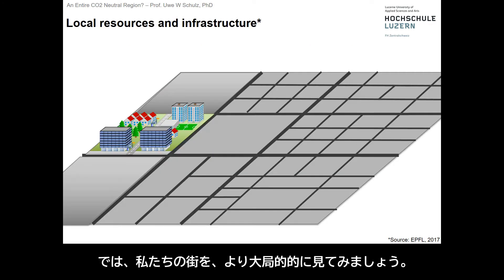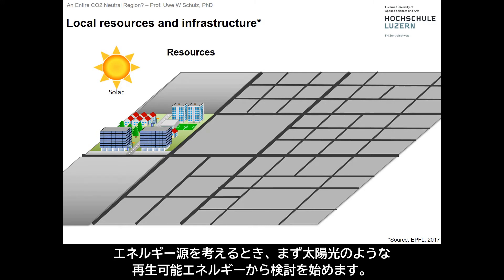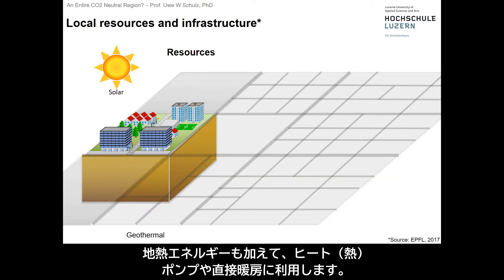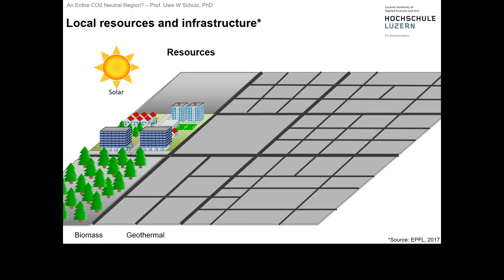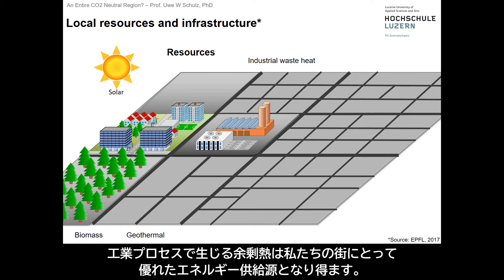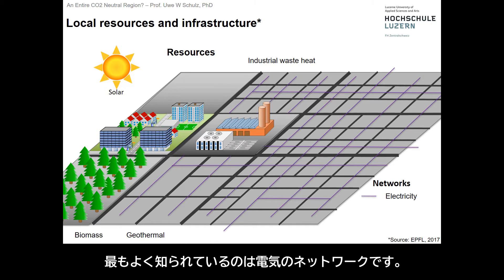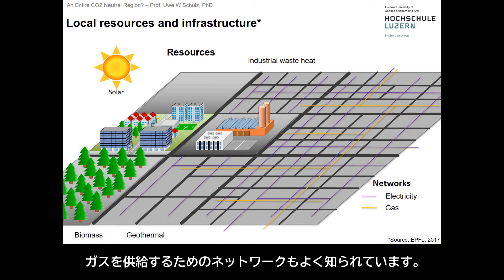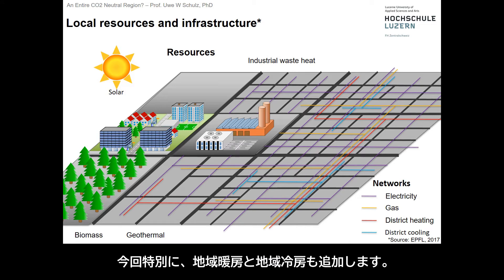Now we place our district into a bigger picture. When we look at energy resources, we start with renewable energies like solar. It also includes geothermal energy from the ground, either for the heat pump or for direct heating. Wood as biomass — biomass is an excellent resource if being reforested. Excess heat from industry processes could provide an excellent resource for energy supply of our district. The most well-known networks are for electricity and gas distribution. What we are adding particularly is district heating and district cooling.